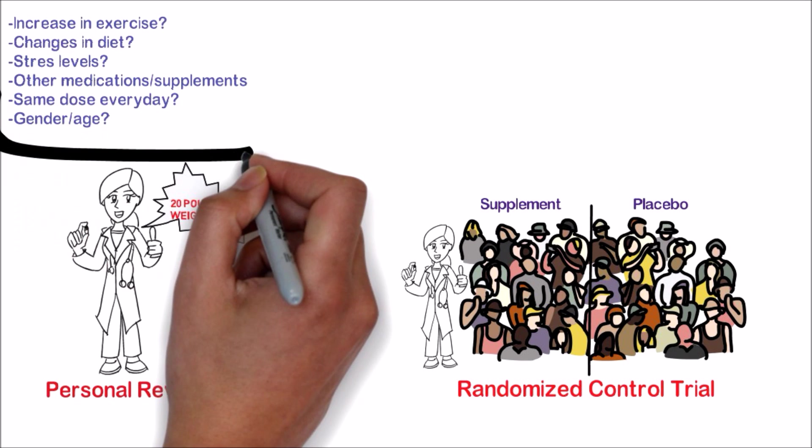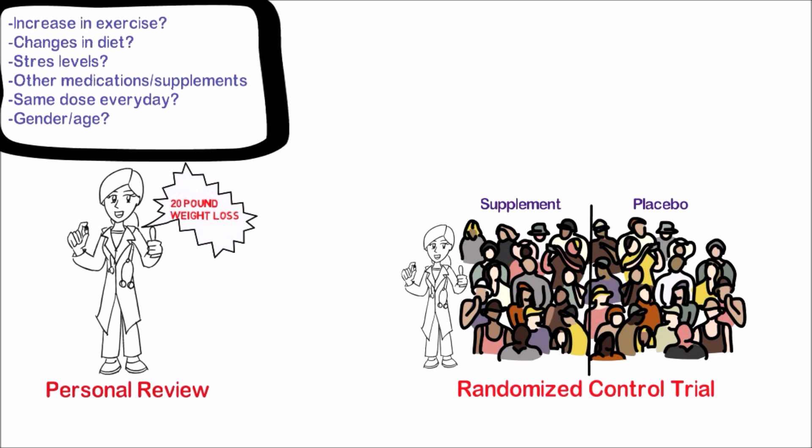If the study is designed well, factors such as exercise, diet, stress, and medications are all controlled for so that they are the same among the two groups.